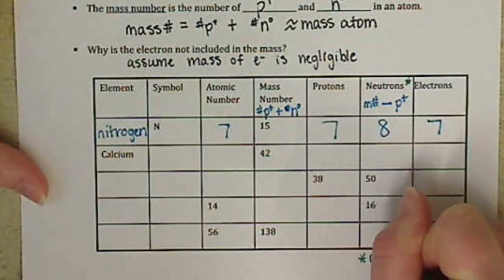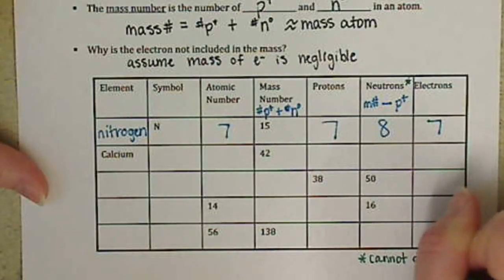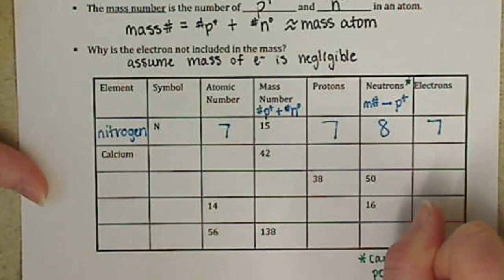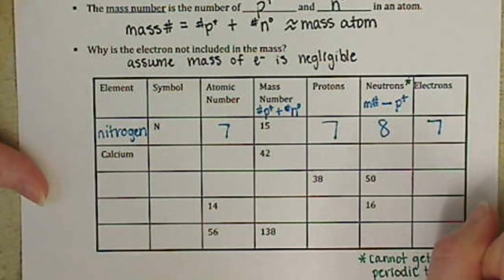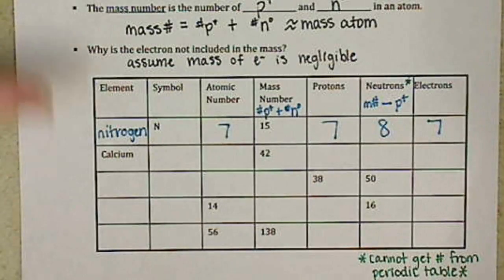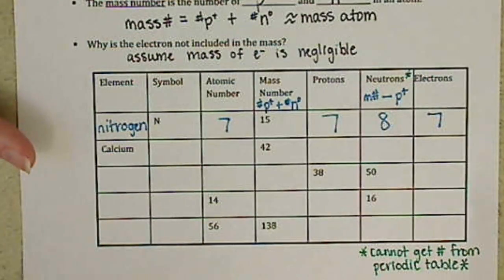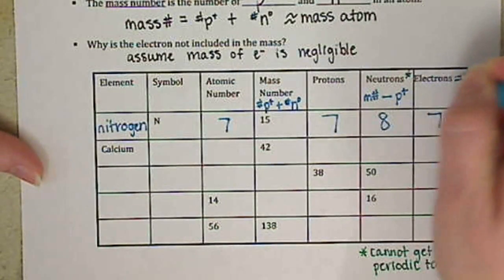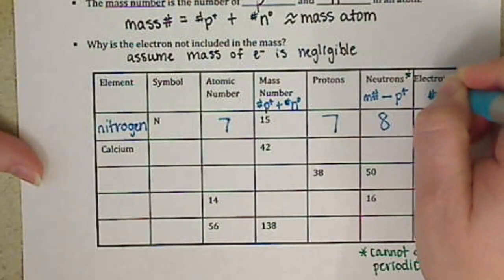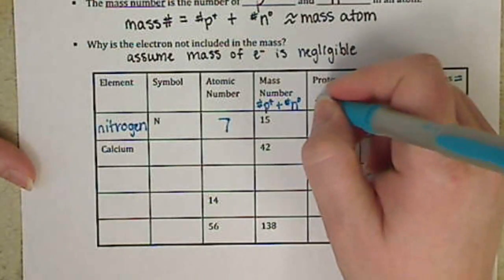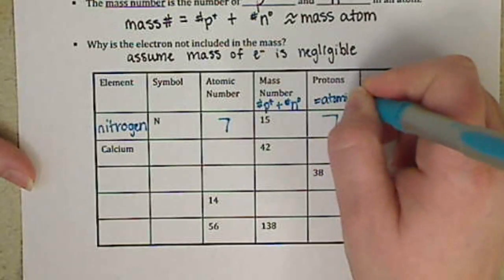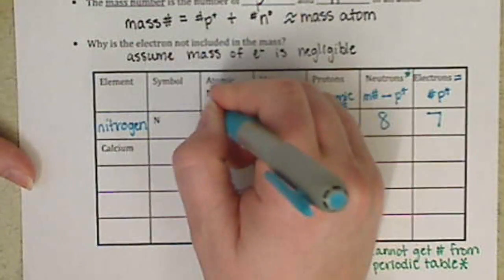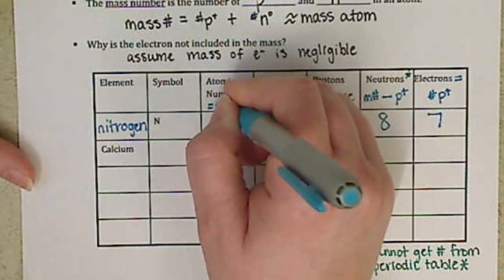And then we'll put that side note for our neutrons. We cannot get number from the periodic table. Our number of neutrons is equal to our number of protons. Our number of protons is equal to the atomic number.